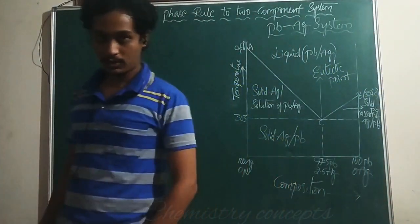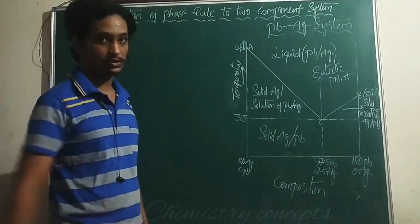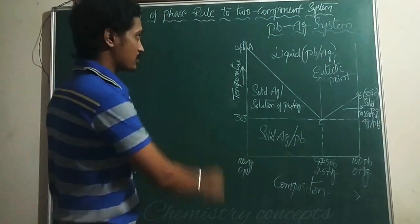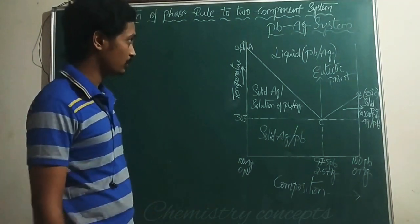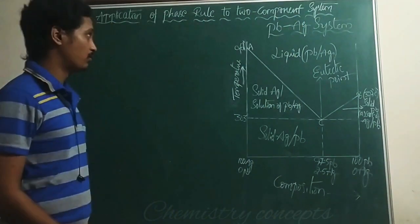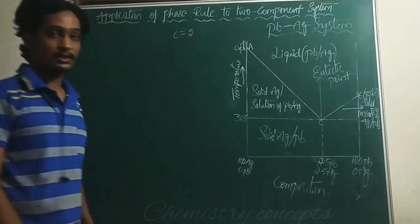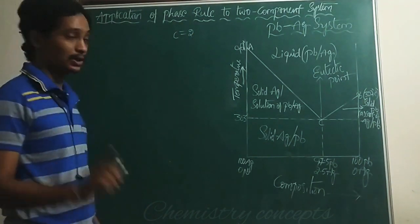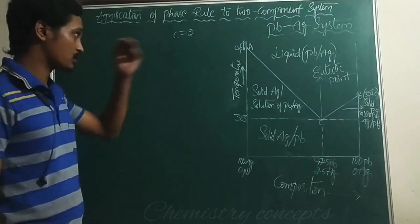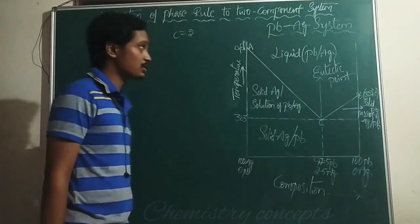Hello everyone, welcome to Chemistry Concepts. In today's session we will discuss the application of a two-component system, that is the lead and silver system. In the last two videos we discussed about one-component systems — water and sulfur. Today we shall discuss about the lead and silver system.